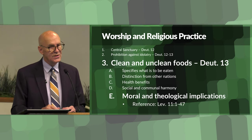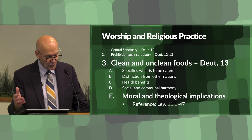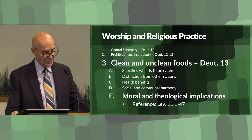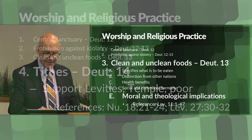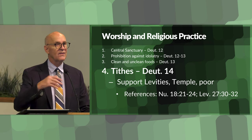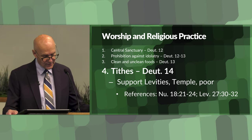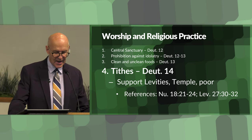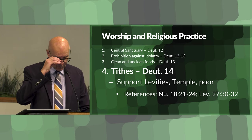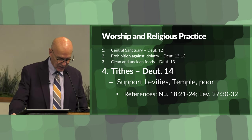Everything they did was done in a way that honored God. You can read about these food laws in Leviticus chapter 11, verses 1 to 47. The next item were the tithes - a tenth of all produce and livestock was to be given as a tithe to the Levites, and then the Levites themselves would take a tenth of what they received and pass that along to the priests. The purpose was to support the Levites and the temple in its work, as well as assisting the poor. You can read about these laws in Numbers 18 and also in Leviticus 27.